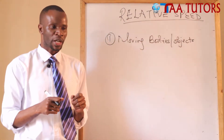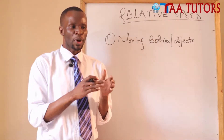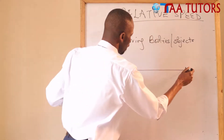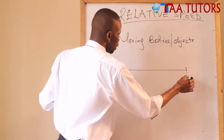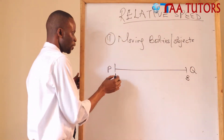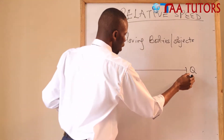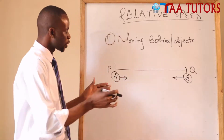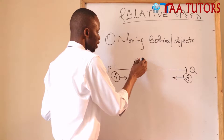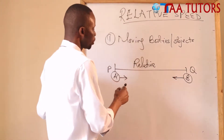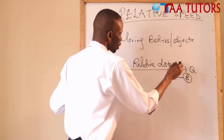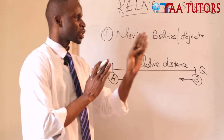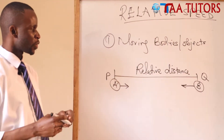If two objects are moving towards each other, there is what we call the distance between them — the relative distance. For example, if object A is moving towards point Q and object B is moving towards point P, the distance between these two moving bodies is called relative distance. Relative distance is the distance between two moving objects, whether they are moving towards each other or in the same direction.